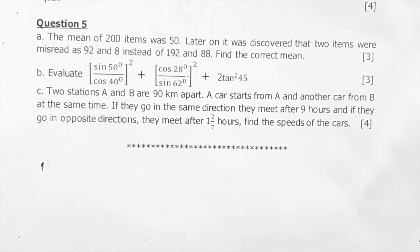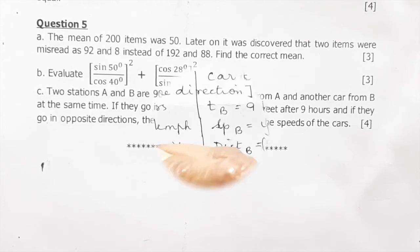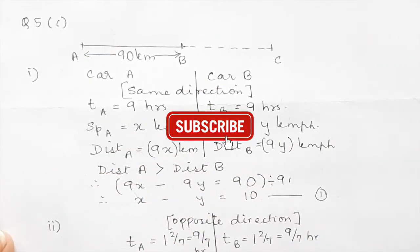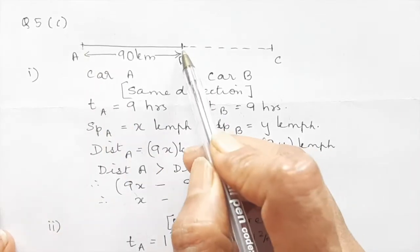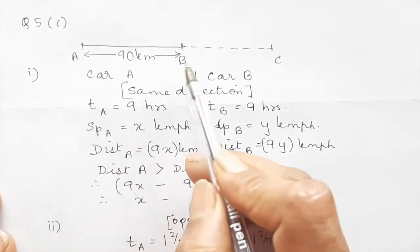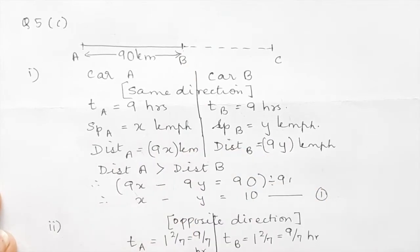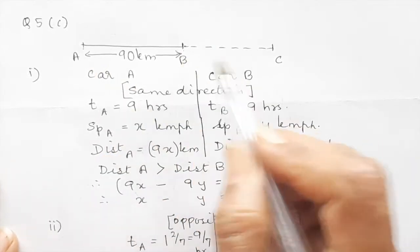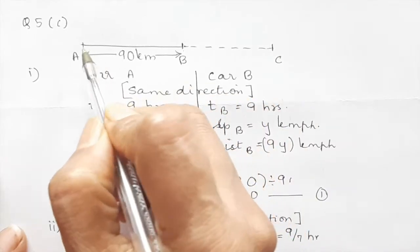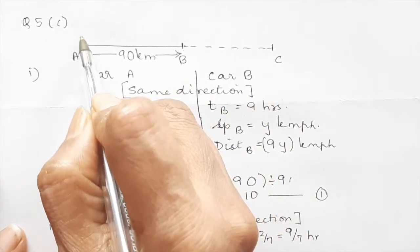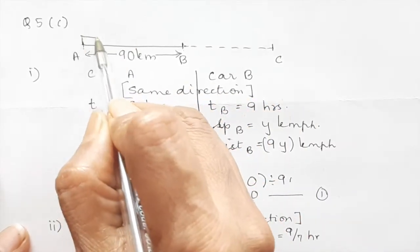One car will have speed x and the other one will have speed y. To solve a question like this we need to draw the diagram. This is station A and this is station B and they are 90 kilometers apart. Now car A and car B both start in the same direction.